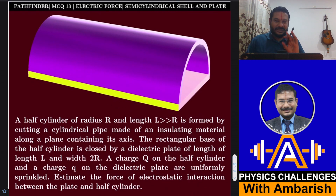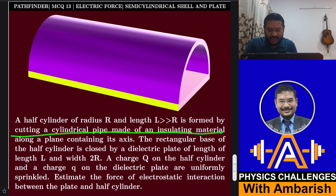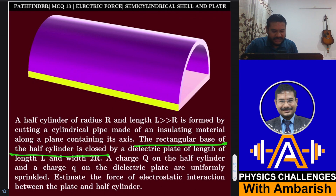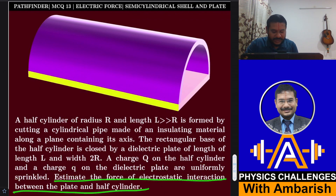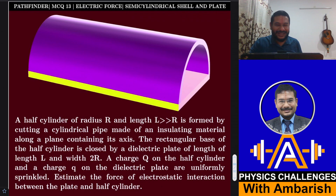So what's the other problem from Pathfinder from which this problem is inspired? A half-cylinder of radius capital R and length capital L, much greater than R, is formed by cutting a cylindrical pipe made of an insulating material along a plane containing its axis. The rectangular base of the half-cylinder is closed by a dielectric plate of length L and width 2R. Charge capital Q on the half-cylinder and a charge small Q on the dielectric plate are uniformly sprinkled. Estimate the force of electrostatic interaction between the plate and half-cylinder.